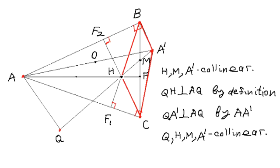Also, HQA is the right angle by definition of point Q, and A'QA is the right angle, because it's subtended by the diameter AA'. From this, it follows that QH and QA' lie on one straight line, so all four points Q, H, M, and A' are collinear.